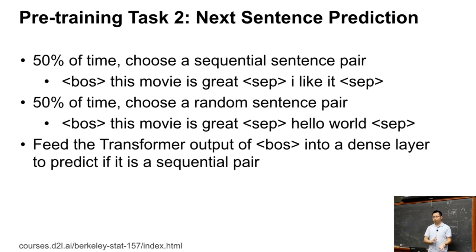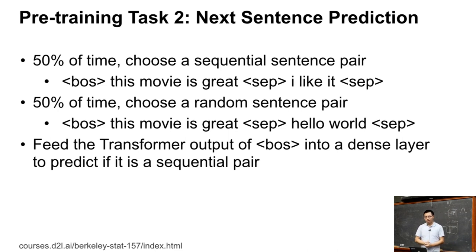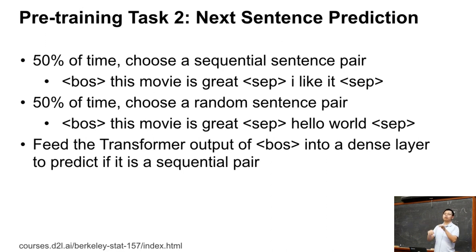The second pre-training task is Next Sentence Prediction, which trains the model to understand sentence relationships. 50% of the time, we choose a pair of sentences that are sequential in the original text — the same paragraph, so they follow naturally (positive case). The other 50% of the time, we use a random pair of sentences (negative case). We then do binary classification as the second loss. In this way, we let the transformer learn sequence-level structure and sentence relationships.